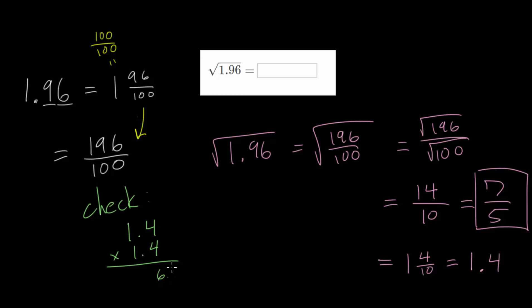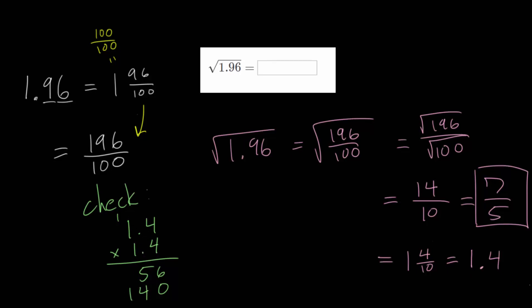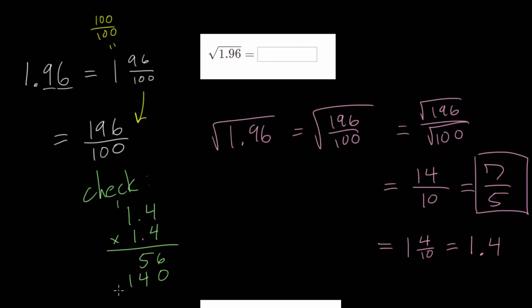So we do 4 times 4, which is 16, we carry up the 1. 4 times 1 is 4, plus 1 is 5. We put a 0 to move to the next place over. And we do 1 times 4, which is 4, and 1 times 1, which is 1. Let me just make a little more room here. And now we add. So going straight down, 6 and 0 makes 6, 5 and 4 makes 9, and bringing the 1 down, we get 196.